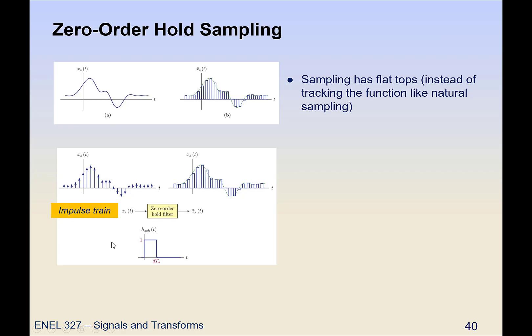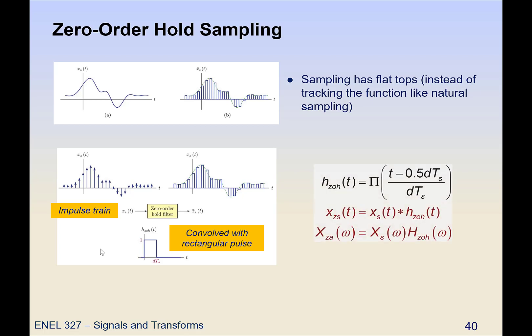Okay. Now mathematically, so that's just an impulse train convolved with a rectangular pulse, and we end up with our zero order hold sampled signal.